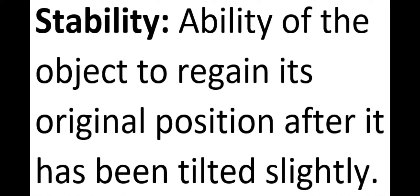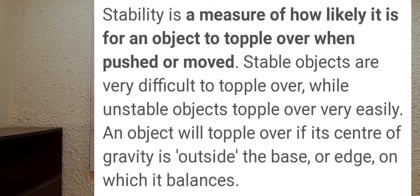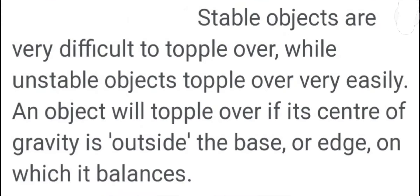Stability is the ability of an object to regain its original position after it has been tilted slightly. It is a measure of how likely it is for an object to topple over when pushed or moved. Stable objects are very difficult to topple over while unstable objects topple over very easily. An object will topple over if its center of gravity is outside the base or edge on which it balances.